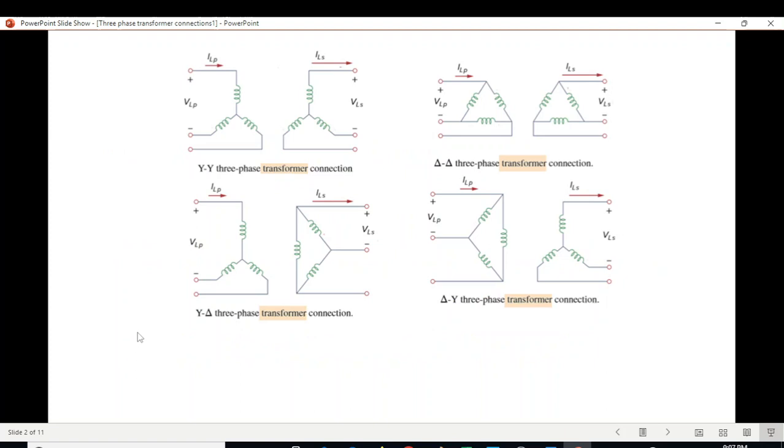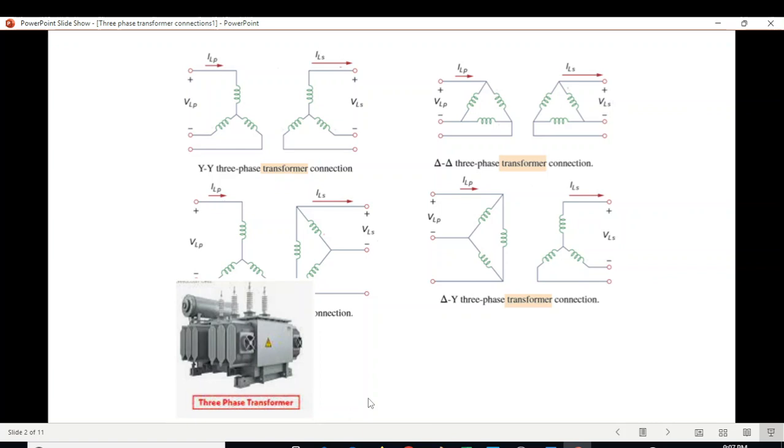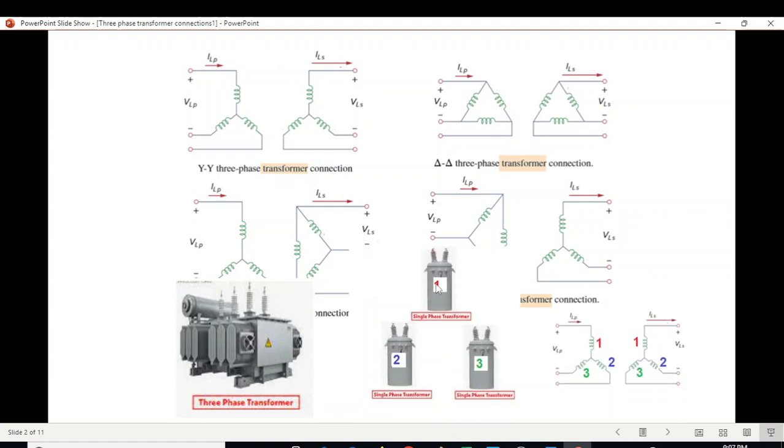We are discussing basic transformer configurations. There is Y-Y, Y-Delta, Delta-Y, and Delta-Delta connections. Primarily a three-phase transformer uses a circuit connection. For easy understanding, it is actually a single-phase transformer - number one transformer primary and secondary, number two transformer primary and secondary, number three transformer primary and secondary.